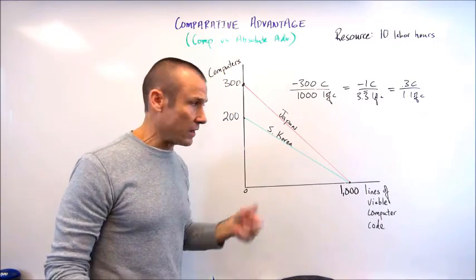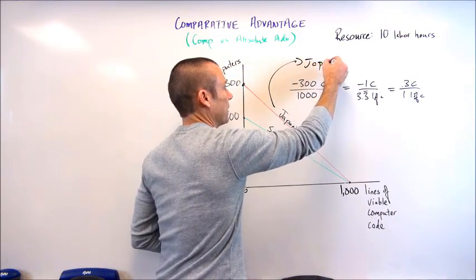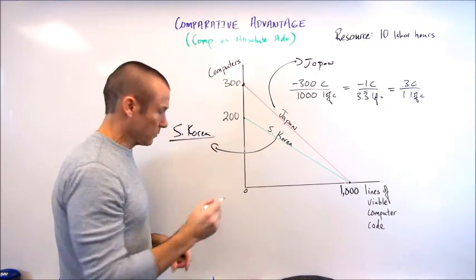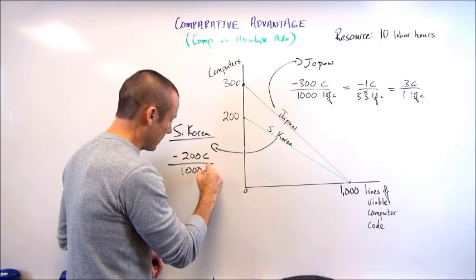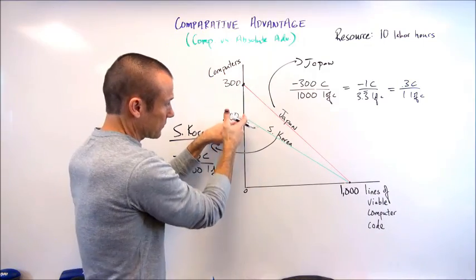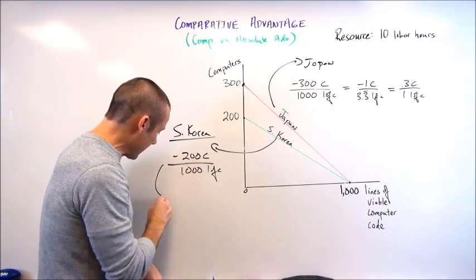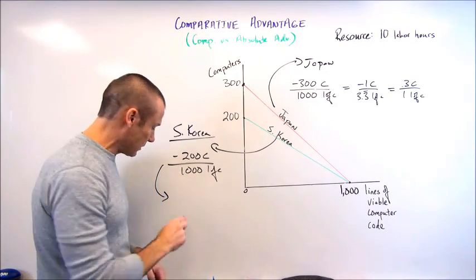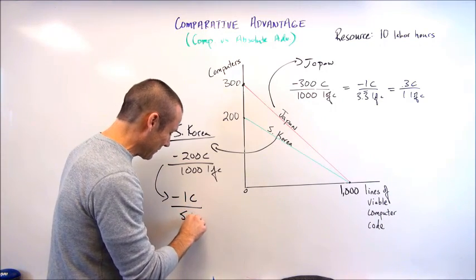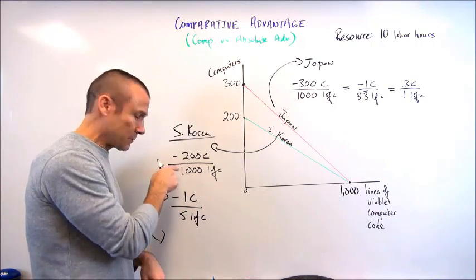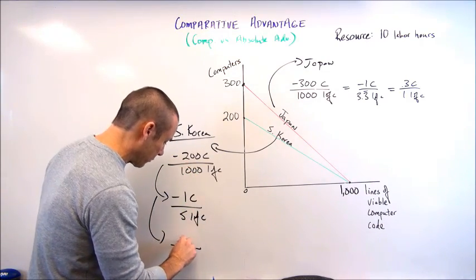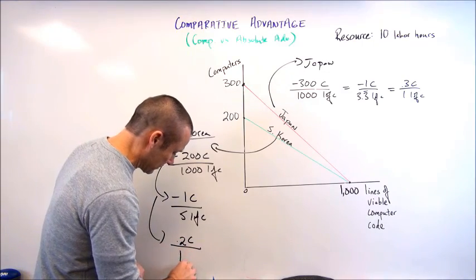Now let's jump over to South Korea. I'll mark Japan's information and pull South Korea's out separately. South Korea's slope the easy way: negative 200 computers over 1000 lines of code. If they make 200 computers they make zero lines of code, and if they divert all resources to lines of code they give up 200 to get 1000. Dividing both by 200 gives one computer equals five lines of code. Then dividing both by 1000 gives 0.2 computers equals one line of code.